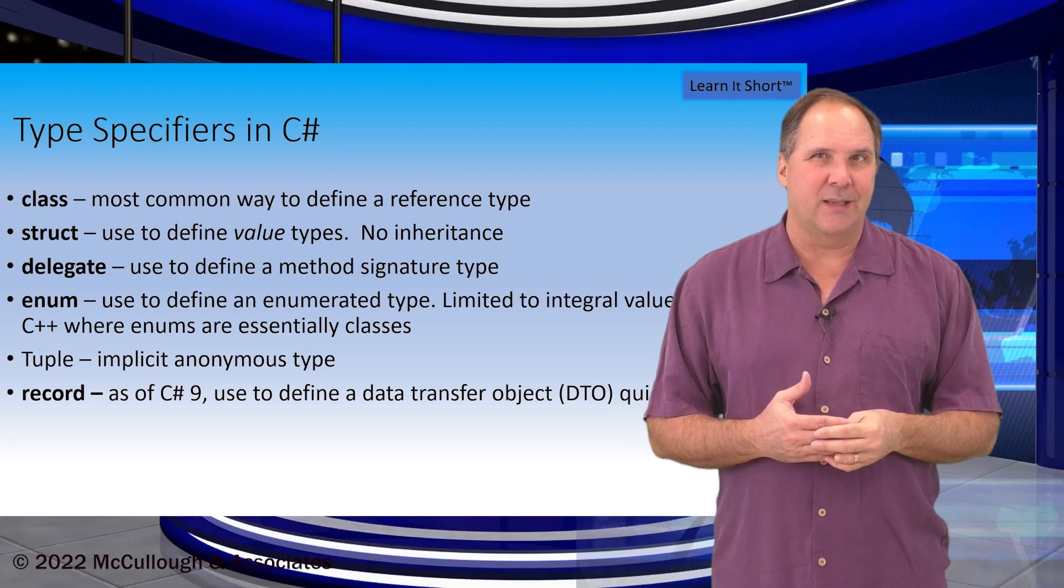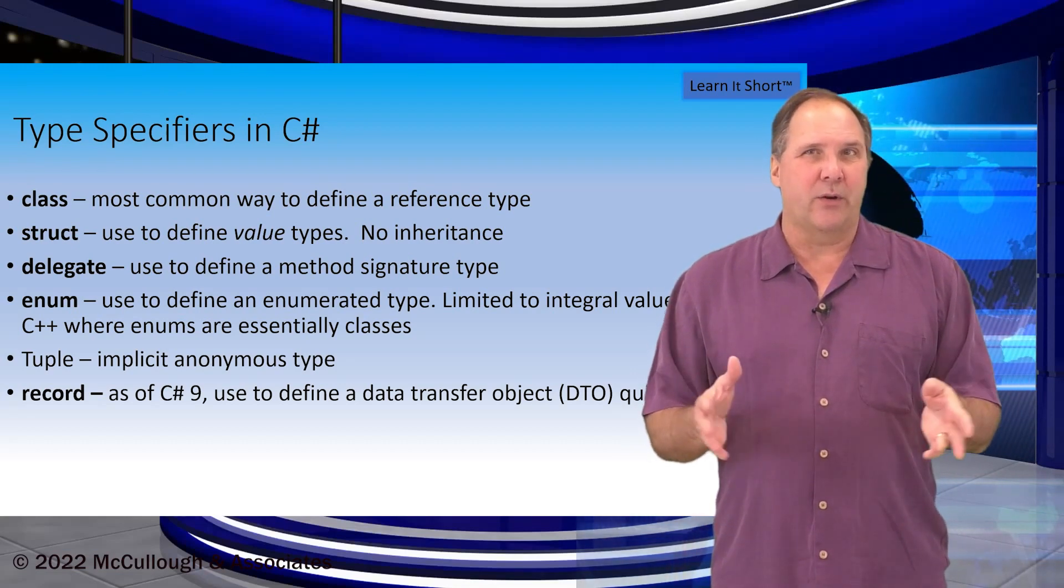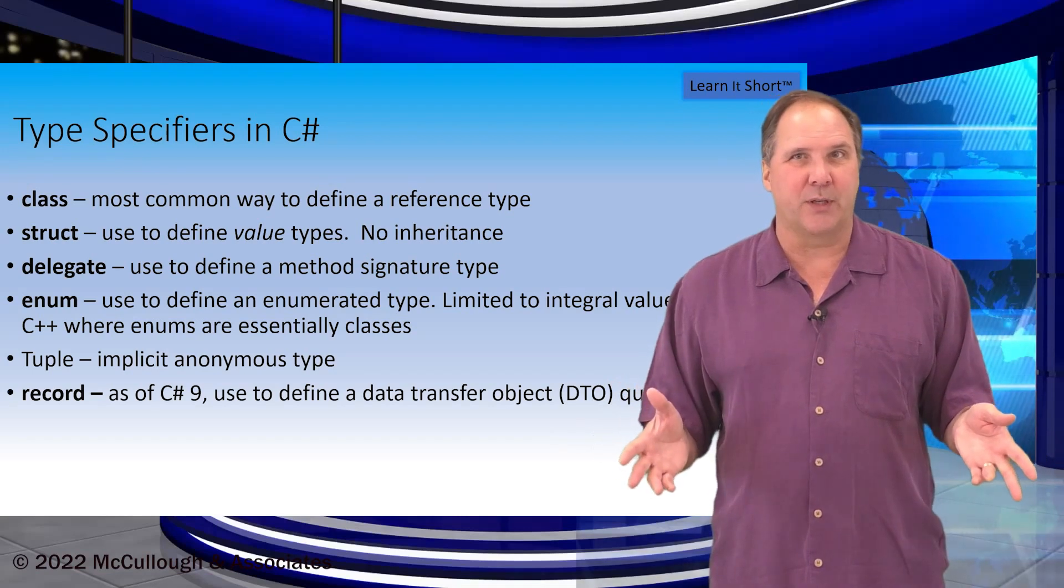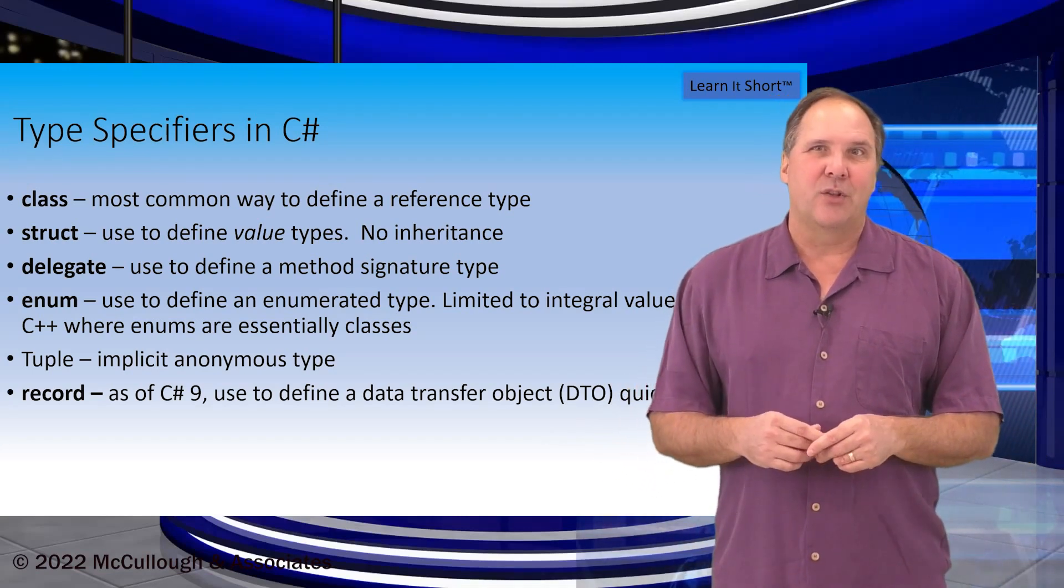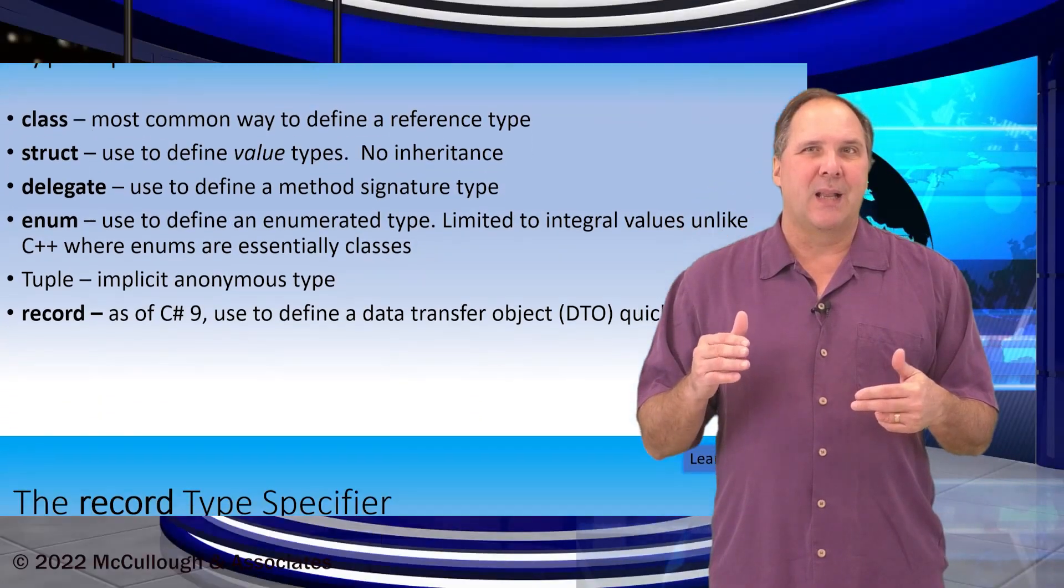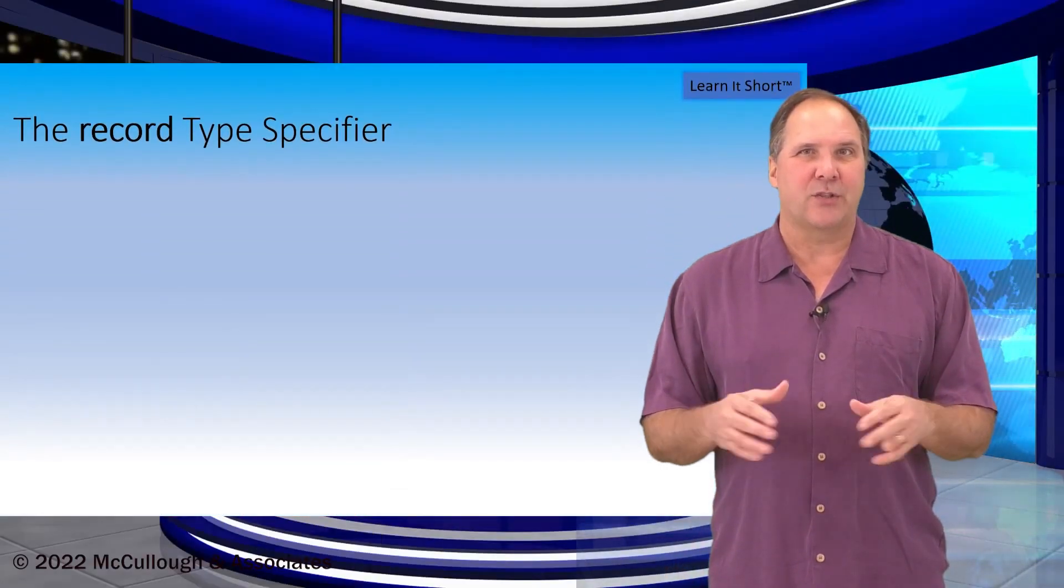New in C-sharp version 9 is the record keyword and it can be used to define a data transfer object with concise syntax. The record is more formal than a tuple but less heavy than a class or struct.